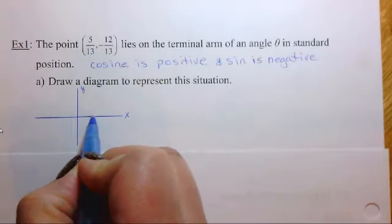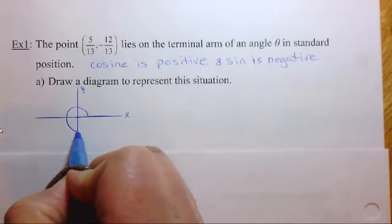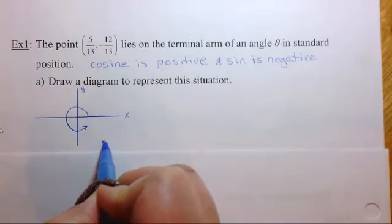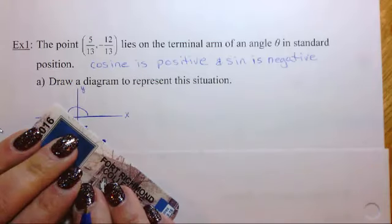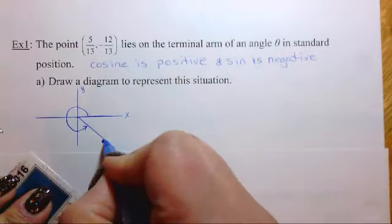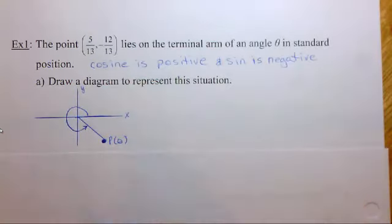So let's draw a quick diagram of how this is represented. So our initial arm is here. And so we start our angle. We need to show our arc is going to go, and let's say it goes to right about here. If the point lies right there, we could draw a line and indicate that this is P theta.